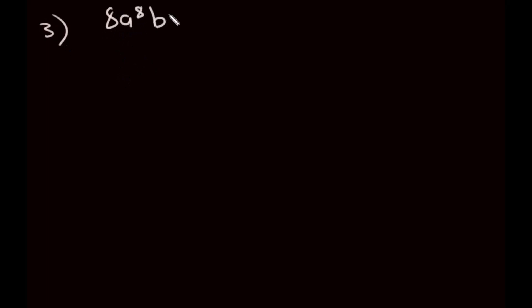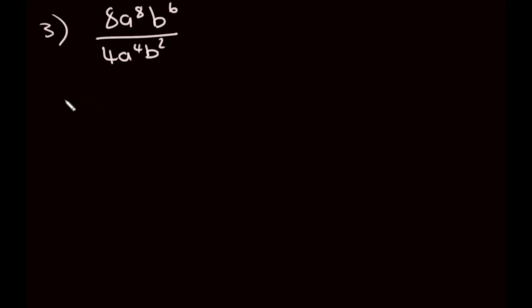Now we're going to look at division of algebraic expressions. We have 8a to the power of 8, b to the power of 6, over 4a to the power of 4 and b to the power of 2. When dividing two terms with the same base, the exponents subtract — the top exponent gets minused by the bottom exponent. Looking at the numbers: 8 divided by 4 gives us 2. For a: 8 minus 4 is 4. For b: 6 minus 2 is also 4. So our final answer is 2a to the power of 4, b to the power of 4.